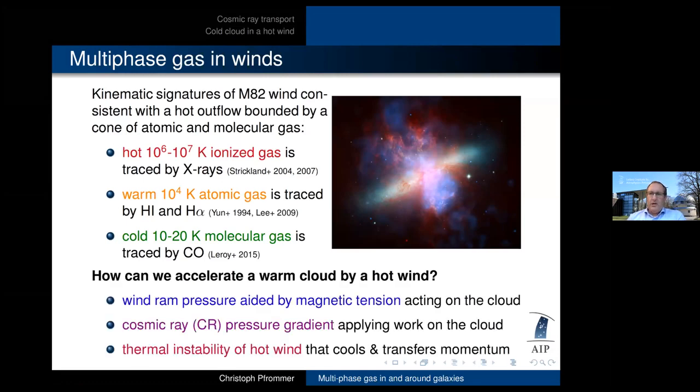Now the question I would like to answer, not finally answer, but give some sort of clues about how can we then accelerate a warm cloud by a hot wind that we observe here. But there's three possibilities I can think of. There's the wind ram pressure aided by magnetic tension that acts on a cloud. The second possibility is a cosmic ray pressure gradient that applies work on a cloud. And finally, there could be some instability of a hot wind that cools and thereby transfers momentum to the cold phase.